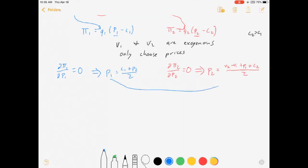So I could substitute this in there, or I could substitute this in there. Either way, it doesn't really matter. So let's pick one of them. So p1 is equal to c1 over 2 plus 1 half times v2 minus v1 plus p1 plus c2 over 2. Alright, let's break this up a bit. p1 equals c1 over 2 plus 1 fourth - I'm going to pull the p1 out separate from the rest of the stuff in the parenthesis.